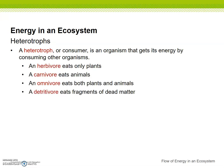Heterotrophs or consumers are organisms that get their energy by consuming other organisms. So an autotroph makes its own food from sunlight. Heterotrophs eat other things — they either eat autotrophs, or they eat other heterotrophs that eat autotrophs, and so on and so on.